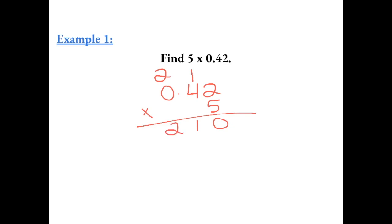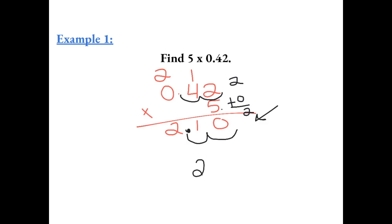Now to find where the decimal place goes, you have to count how many numbers are behind the decimal in the problem. Here there are two numbers behind the decimal, and the 5 has no numbers behind the decimal. So you add those, which gives us 2, and that's how many numbers should be behind the decimal in your answer. So I'm going to move my decimal two places, and we end up with the answer 2.10. You don't need any extra zeros in the back, so the answer is 2.1.